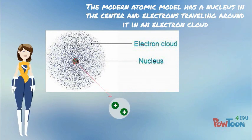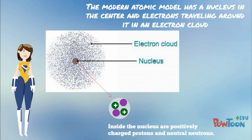The Modern Atomic Model has a nucleus in the center and electrons traveling around it in an electron cloud. The nucleus still has positively charged protons and neutral neutrons.